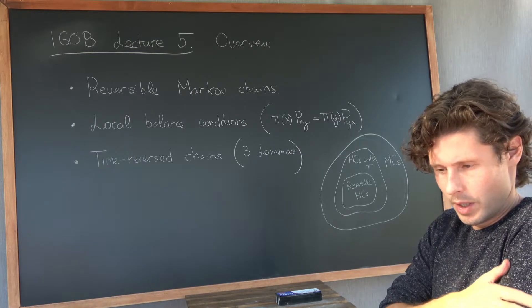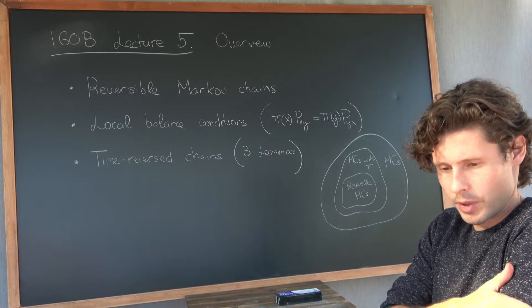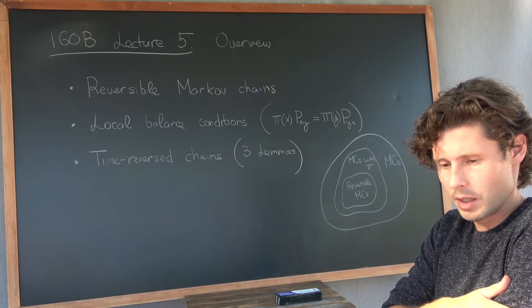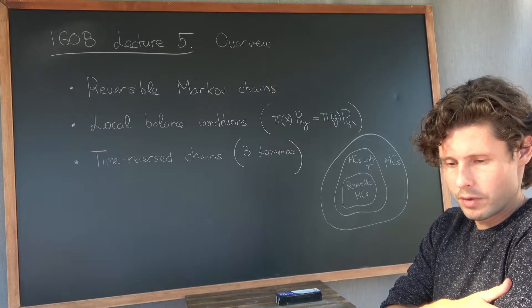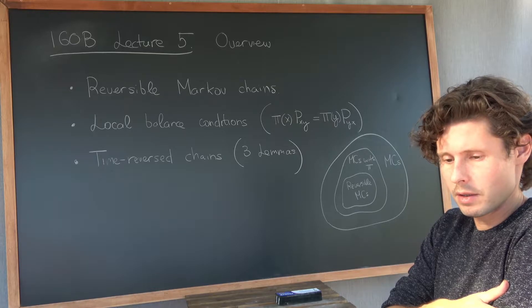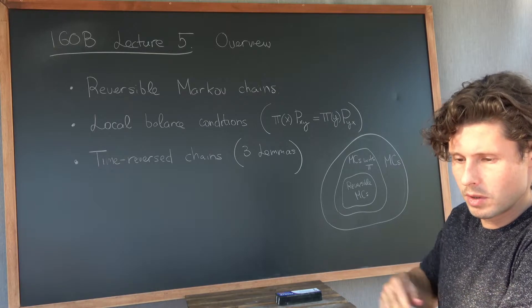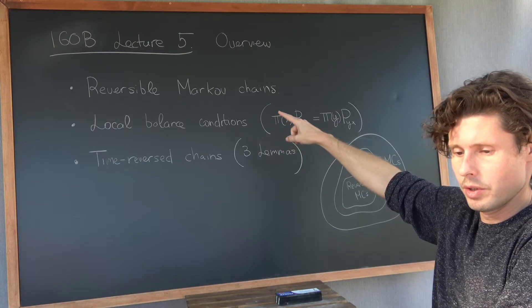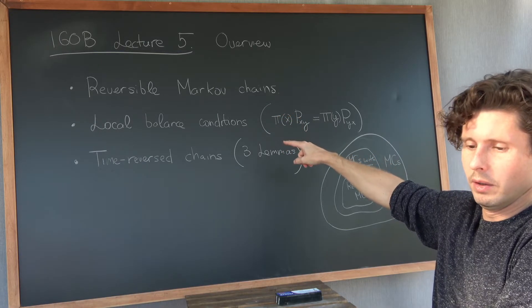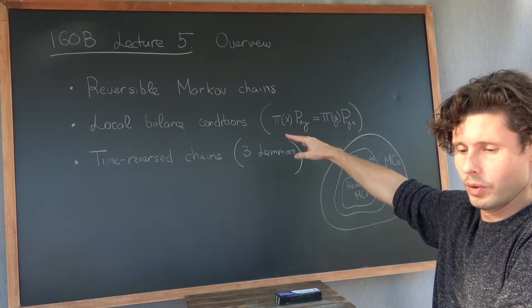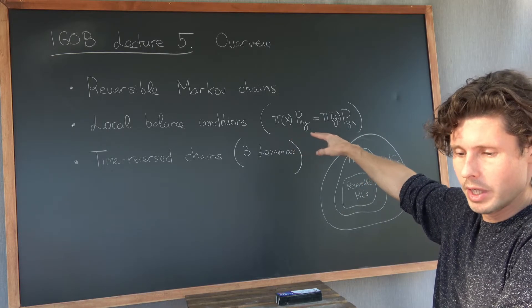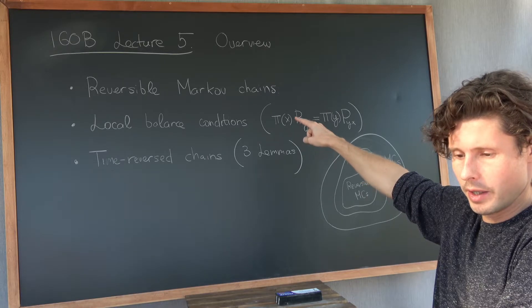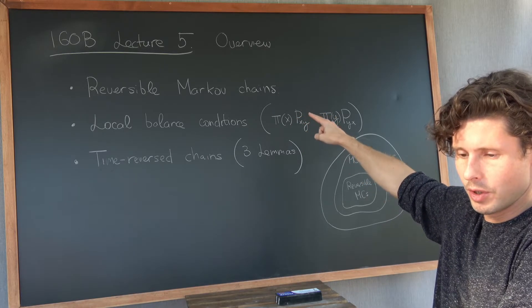If you look in your textbook, or pretty much any textbook, you'll see this kind of one-sentence definition that basically tells you that a Markov chain is reversible if it satisfies the local balance condition, which means its stationary distribution pi will hold these conditions. This relation will hold for all pairs of states x, y with respect to the one-step transition probabilities.